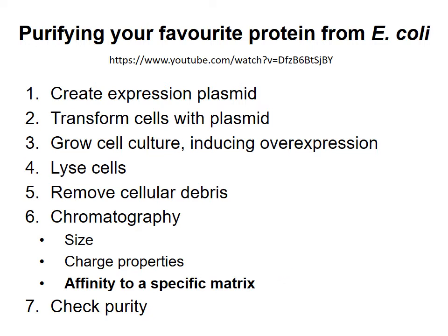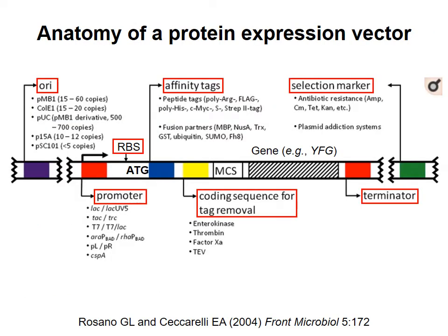And finally, we need a way to check the purity of our protein preparation. In the rest of this video, I want to focus on the properties a plasmid should have if it is to be used for protein overexpression, and I want to show an analysis of a sample purification. This figure shows the main features that an overexpression plasmid or vector should have, with the features you should remember highlighted in red boxes.